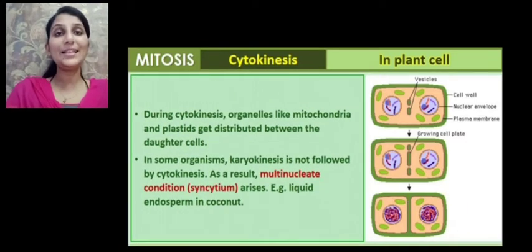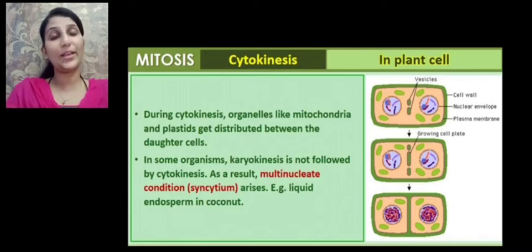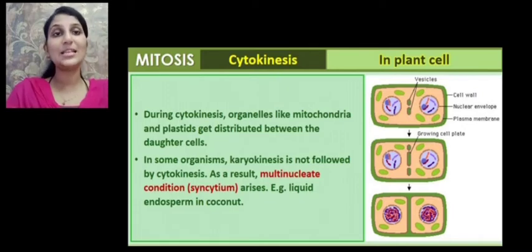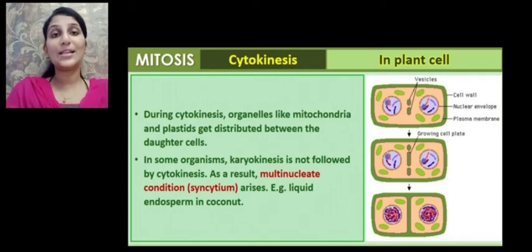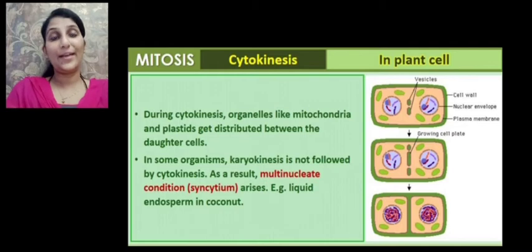In plant cells during cytokinesis, organelles like mitochondria and plastids are distributed equally between the daughter cells. In some organisms, karyokinesis is not followed by cytokinesis. So what happens? It results in a multi-nucleate condition which is otherwise called a syncytium.